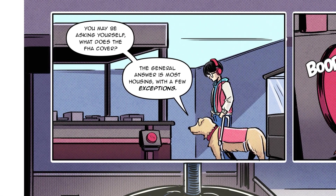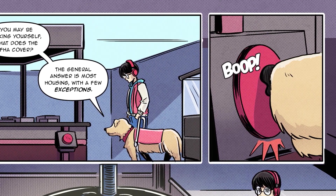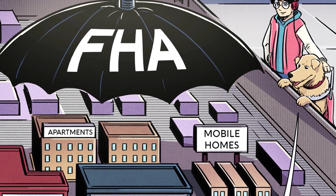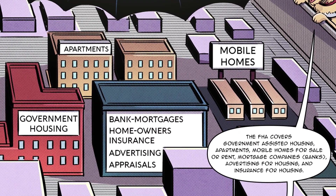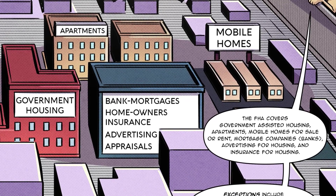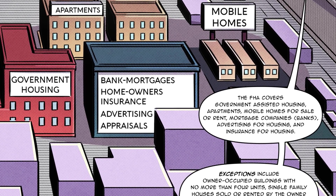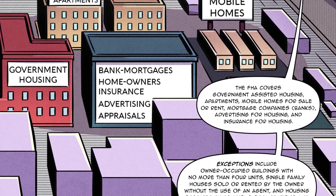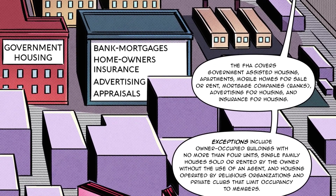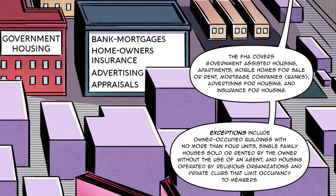You may be asking yourself, what does the FHA cover? The general answer is most housing, with a few exceptions. The FHA covers government-assisted housing, apartments, mobile homes for sale or rent, mortgage companies, banks, advertising for housing, and insurance for housing. Exceptions include owner-occupied buildings with no more than four units, single-family houses sold or rented by the owner without the use of an agent, and housing operated by religious organizations and private clubs that limit occupancy to members.